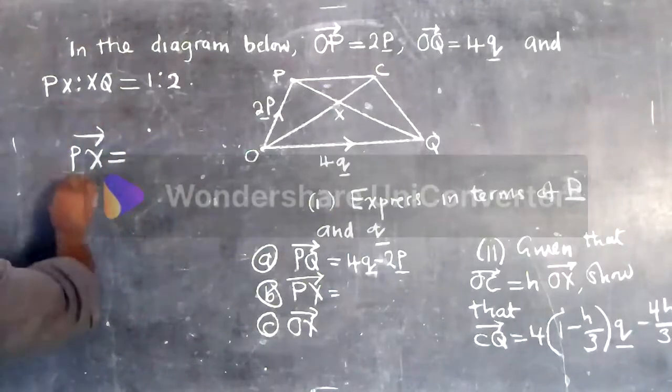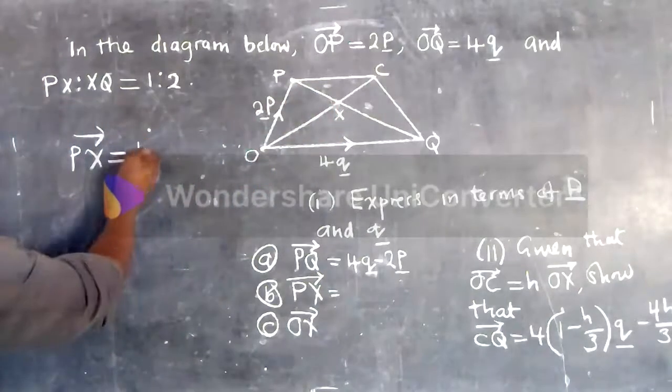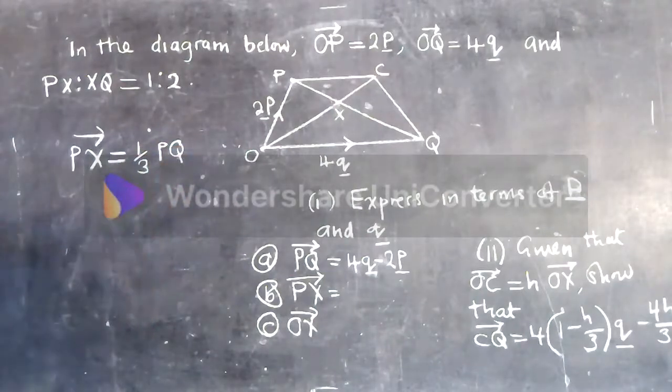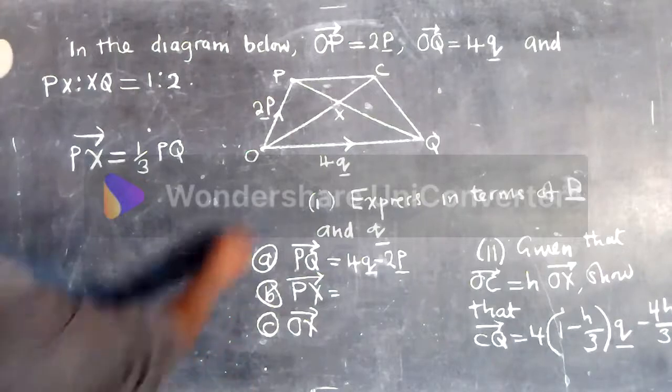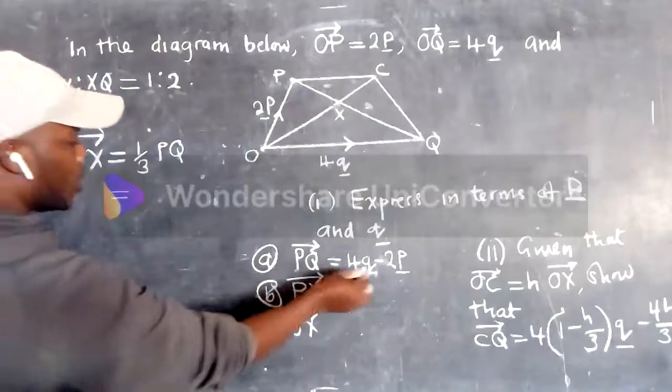Alright, so we know that px, the ratio of px would be one-third of pq. One-third of pq. Do we have pq? Is pq enough?